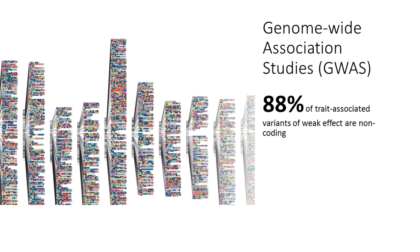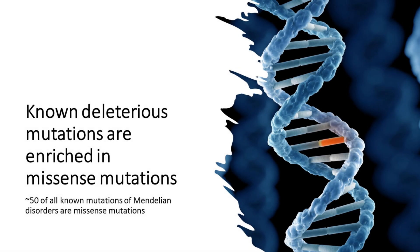Although individually their functional effects may not be as obvious, because these regions are so large, their total effects cannot be neglected, especially for mild traits. However, they remain understudied and better methods are still needed. Most research so far has focused on missense SNVs, in part because known deleterious mutations are enriched in missense mutations — about 50% of all known mutations of Mendelian disorders are missense mutations. However, there may be ascertainment biases, because an important discovery tends to attract more research in the same direction.